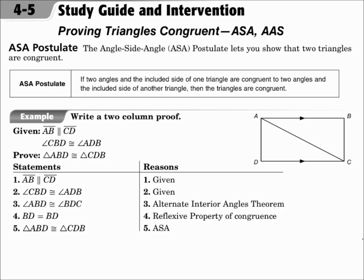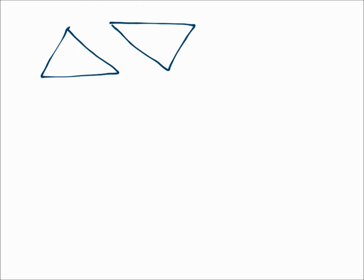These proofs are done the same way that the proofs with side-side-side and side-angle-side were done, with just a different order. ASA is when you have two angles and the side in between them. So if you have two triangles with one pair of angles, the very next pair of sides, and the very next pair of angles, that's angle-side-angle. The side is between the two angles.